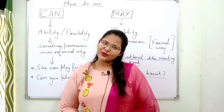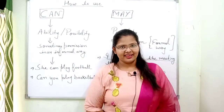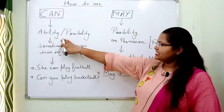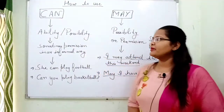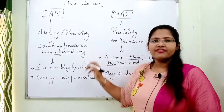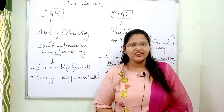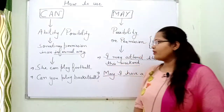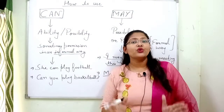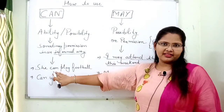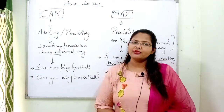Let's start with the use of can. Can is used for ability, possibility and permission. But the permission is in the informal way. For example, can you play basketball? Here we have permission in the informal way. And for ability: she can play football — so here it shows her ability.